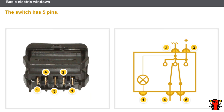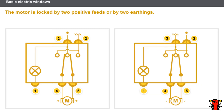Let's look at the electric window switch in more detail. The switch has five pins, including a positive feed wire and an earthing. The electric window system works once there is contact. If the switch is not activated, it is because the motor is locked in the rest position. The motor is generally locked by two positive feeds, though in some cases it can be locked by two earthings.